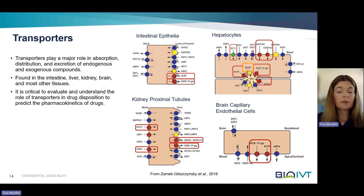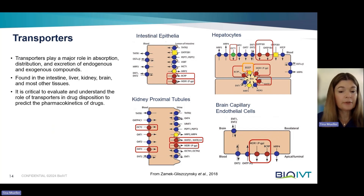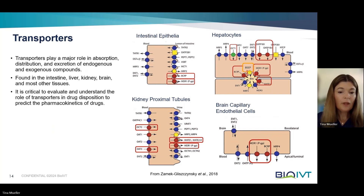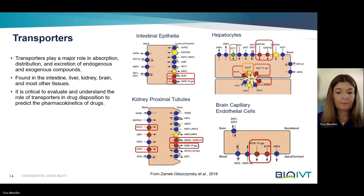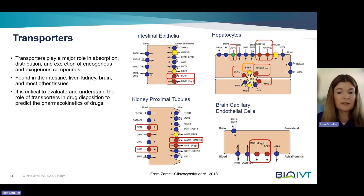There are two types of transporters important in this context: efflux transporters and uptake transporters. Efflux transporters are responsible for moving molecules out of cells, whereas uptake transporters move molecules into cells. One example of an efflux transporter is P-gp, which is expressed in most tissues and restricts the distribution of many drugs into organs — in the intestine it affects bioavailability, whereas in hepatocytes it moves drug molecules into the bile. An example of a liver uptake transporter is OATP1B1, which moves organic anionic molecules from the blood into hepatocytes — for example, statins are transported by OATP1B1.